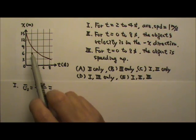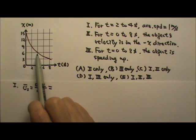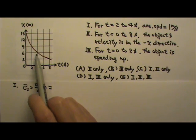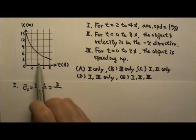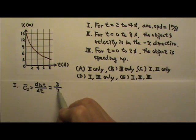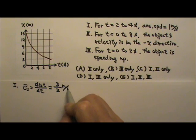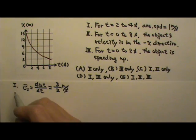So the distance traveled is the amount of the displacement. The displacement from 9 to 6 is negative 3, but the distance traveled is only 3. So the time, 2 to 4 seconds, that would be 2 seconds. So this is 3.5 meters per second. So that one is wrong.